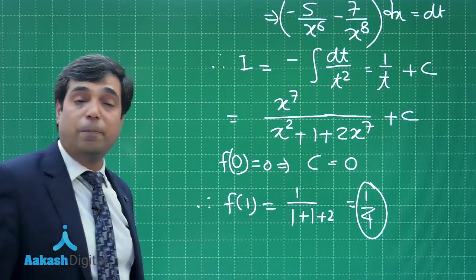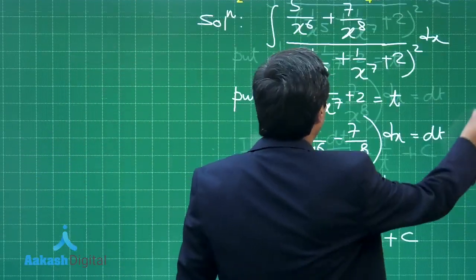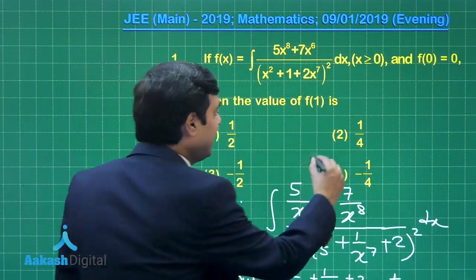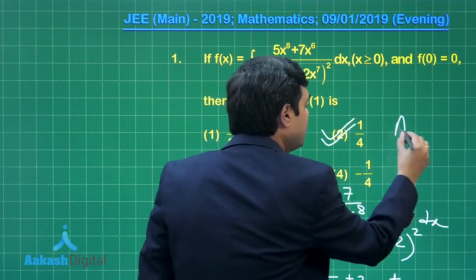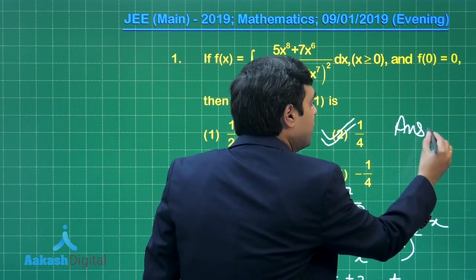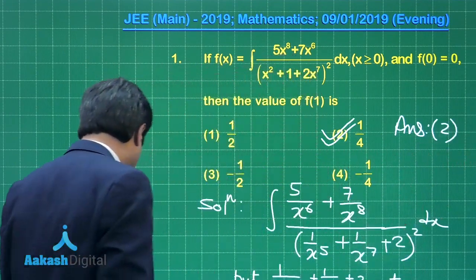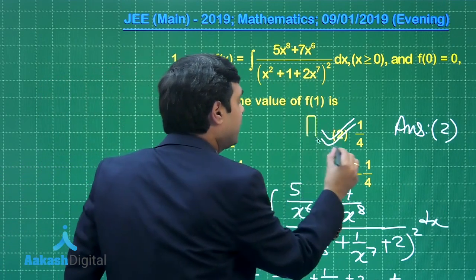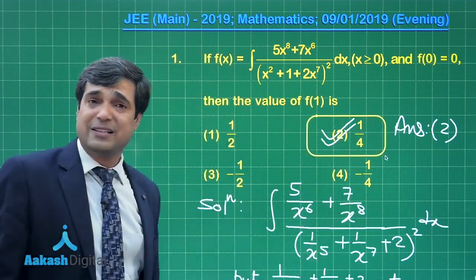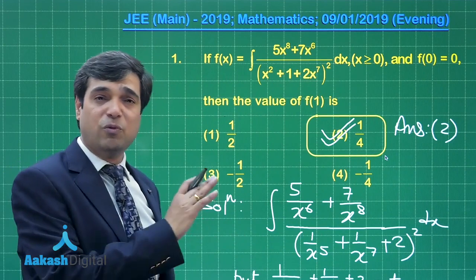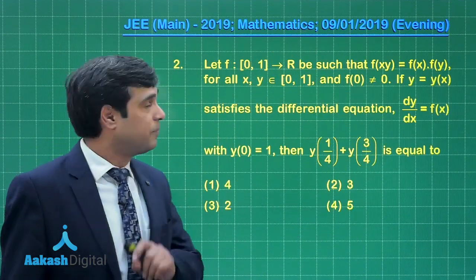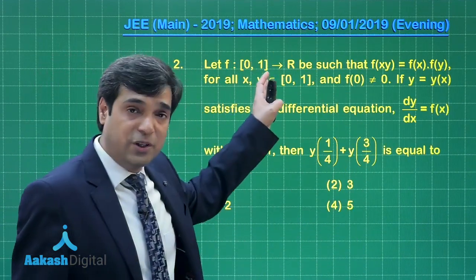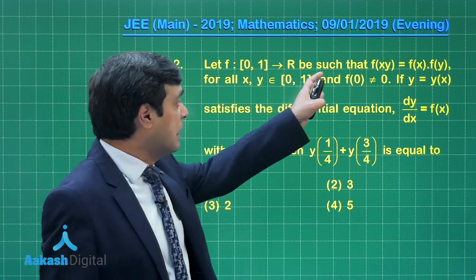The correct answer for this question is 1/4, which is option number 2. Let us mark it — the correct option for question 1 is option number 2. Let us move on to the second question of this paper. Let f from [0,1] to the set of real numbers...